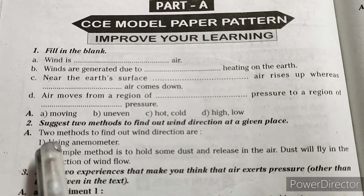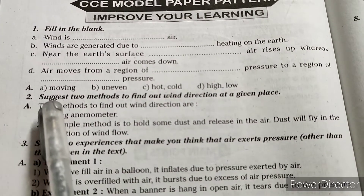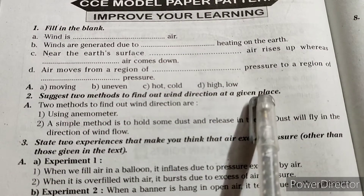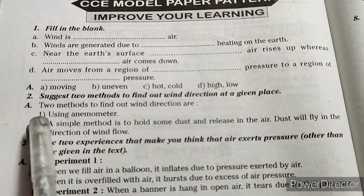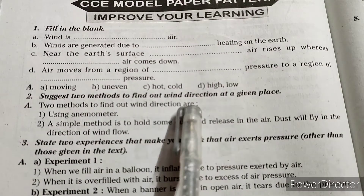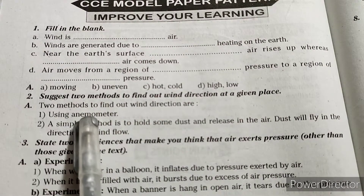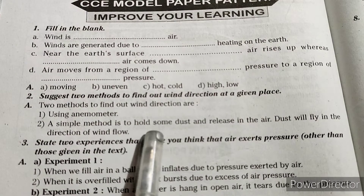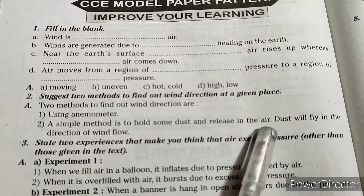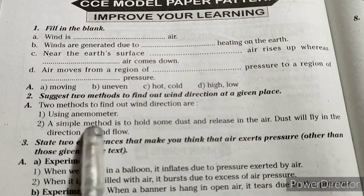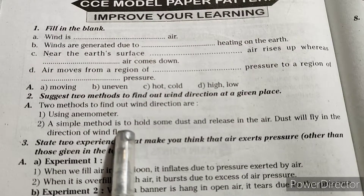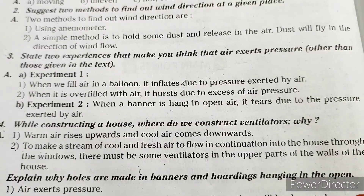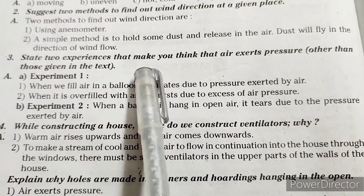Second question: Suggest two methods to find out wind direction at a given place. Answer: Two methods are - first, using an anemometer; second, a simple method is to hold some dust and release it in the air. The dust will fly in the direction of wind flow.